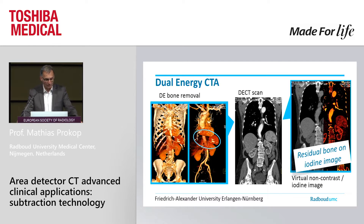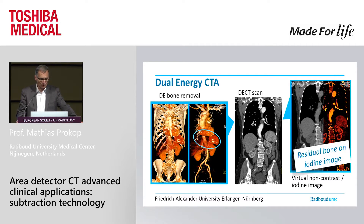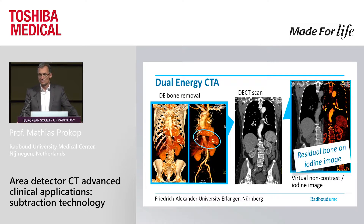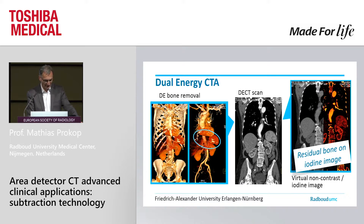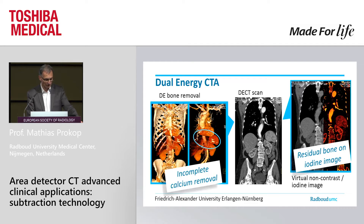If you look at bone removal on dual energy CTA, we have basically two problems. One is that if you look at an iodine image, you can only remove one type of tissue — in this situation, it's soft tissue. So you see the enhancement everywhere, but you also see the bones. You need to try another trick to get rid of the bones, but that trick is not perfect, as you can see on the right-hand side, where calcifications have not been completely removed from these dual energy scans.